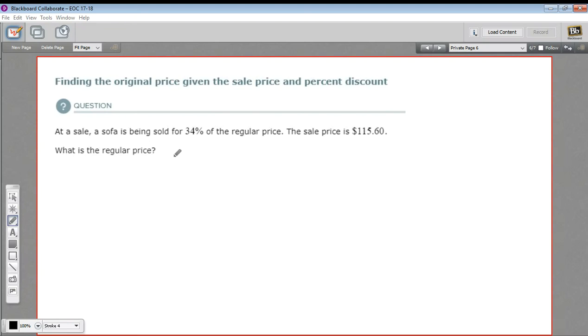In this problem we have a sofa that's being sold for 34% of the regular price, and that sale price is $115.60. We're supposed to figure out what the original price was before.